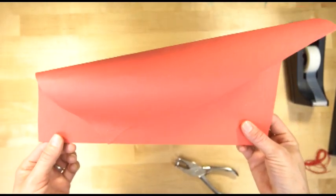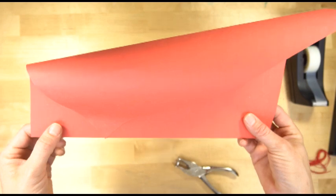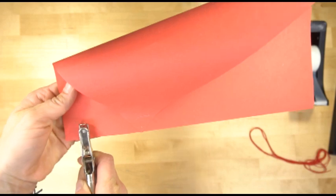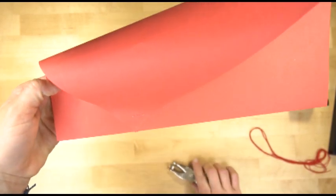Step number four, figuring out where you want to put the hole for your string. You want to put it in this front section. You can put it a little bit more forward or a little bit further back. It's totally up to you.